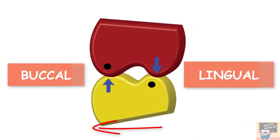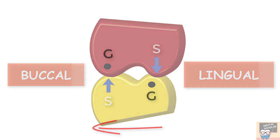In this picture you can see the working side contact — the mandibular tooth has moved buccally with respect to the maxilla. In this position, the occlusal contact is between the opposing supporting and guiding cusps, so the upper supporting contacts the lower guiding and the lower guiding contacts the upper supporting. The blue arrows in this picture are supporting cusps and the black dots are guiding cusps.